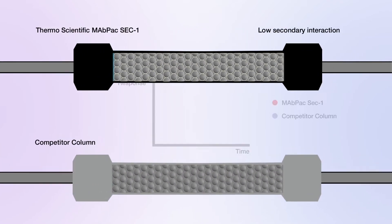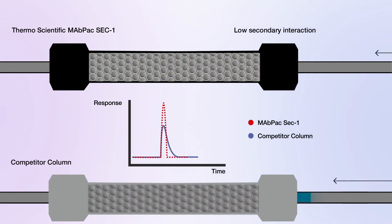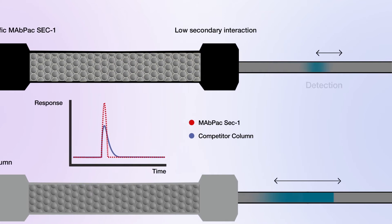Separation must be by size. It's important that there are no secondary interactions between the protein analyte and the column particle. Secondary interactions affect retention time robustness and can give poor peak shape.